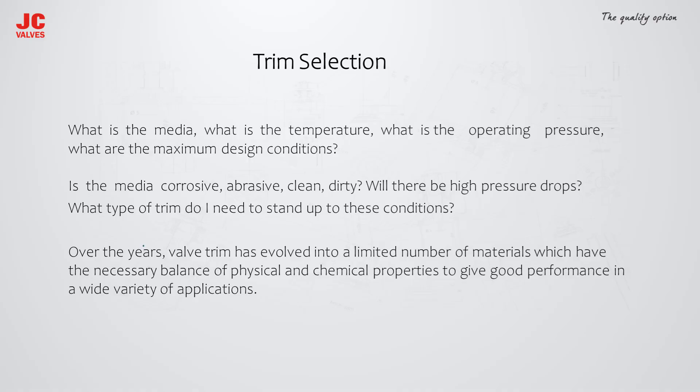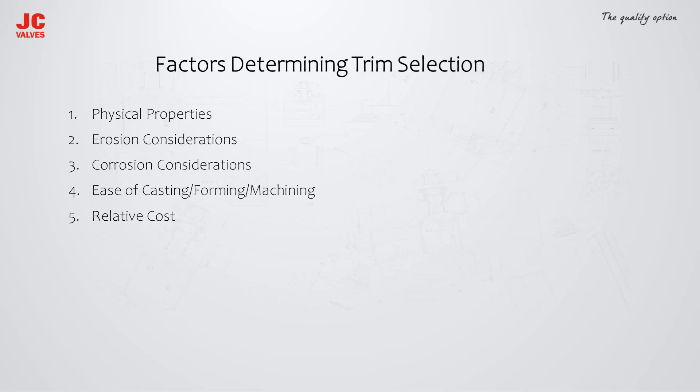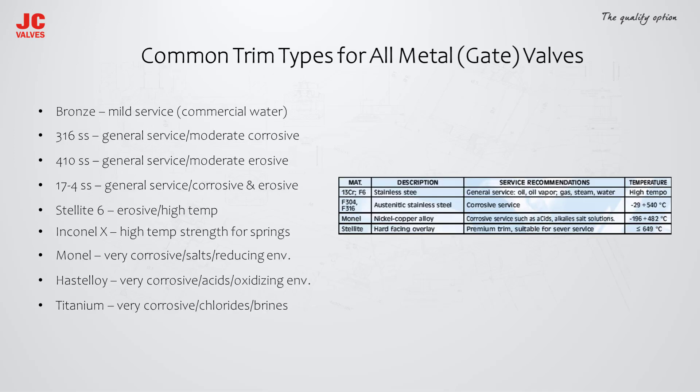The removable and replaceable valve internal parts that come in contact with the flow medium are collectively termed valve trim. These parts include valve seats, disc, glands, spacers, guides, bushings, and internal springs. The valve body, bonnet, and packing are not considered valve trim. Trim parts may be constructed of assorted materials because of the different properties needed to withstand different forces and conditions.